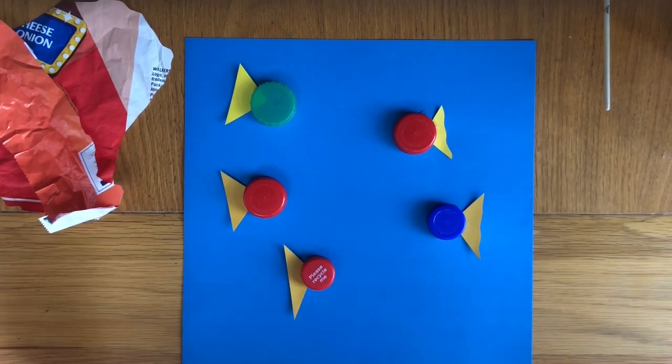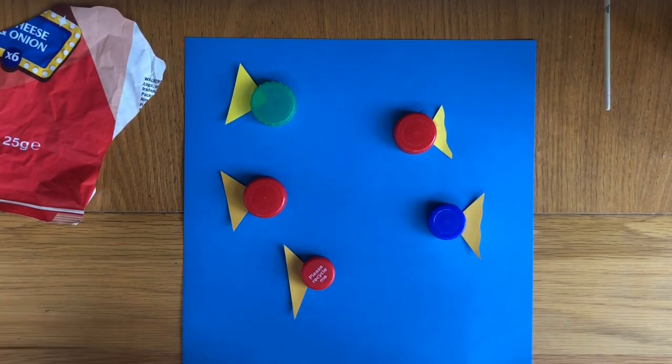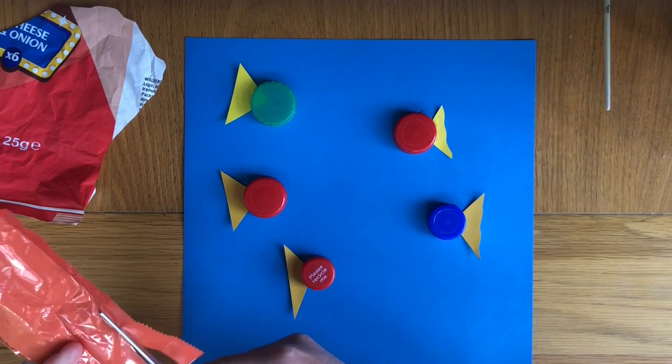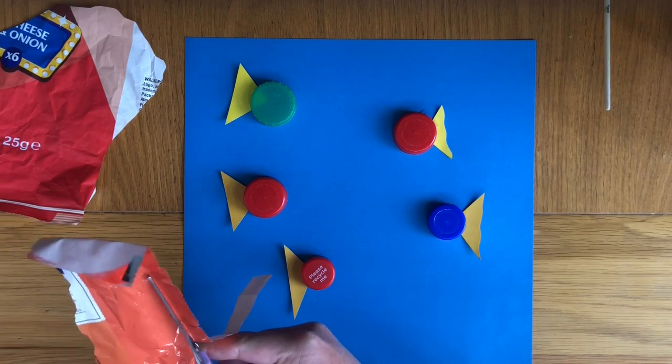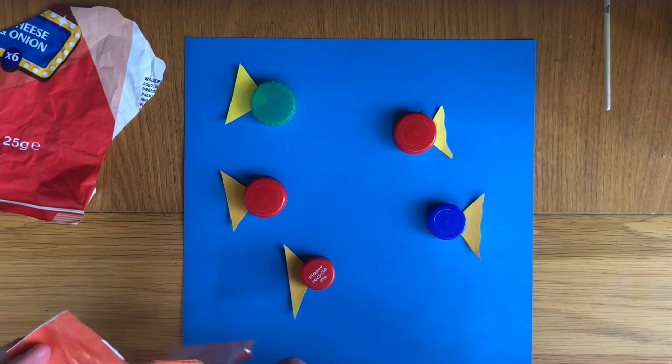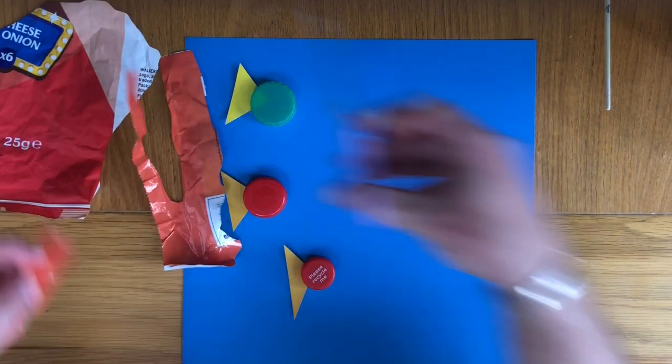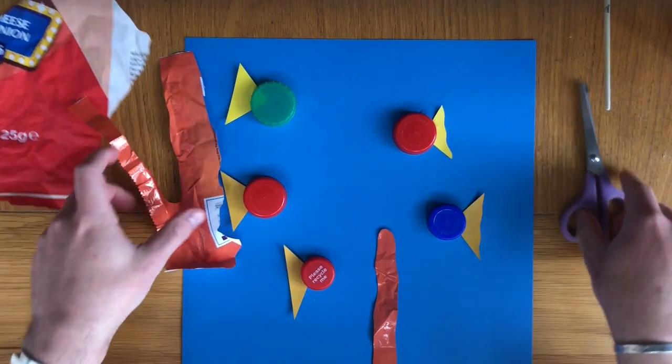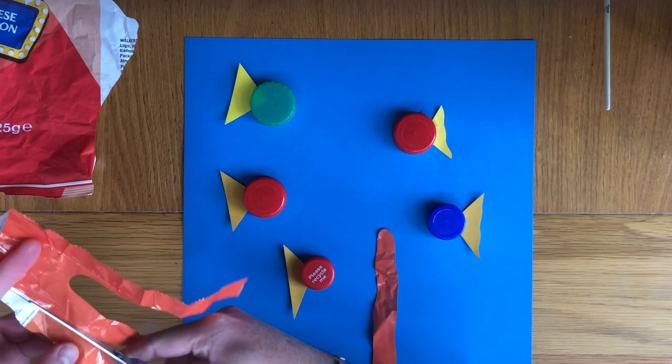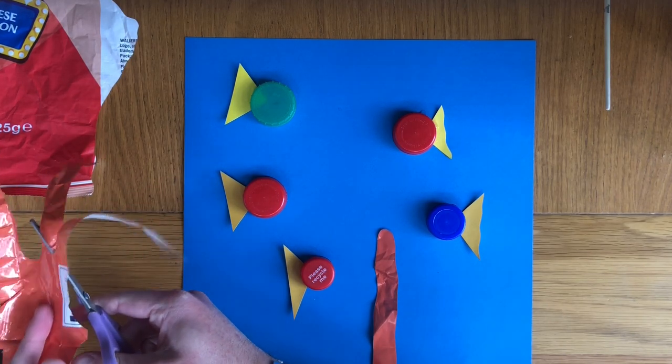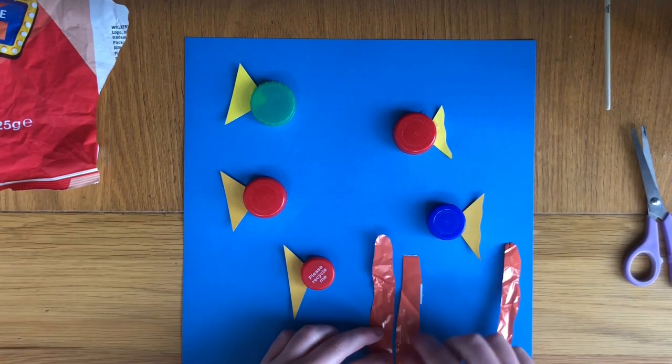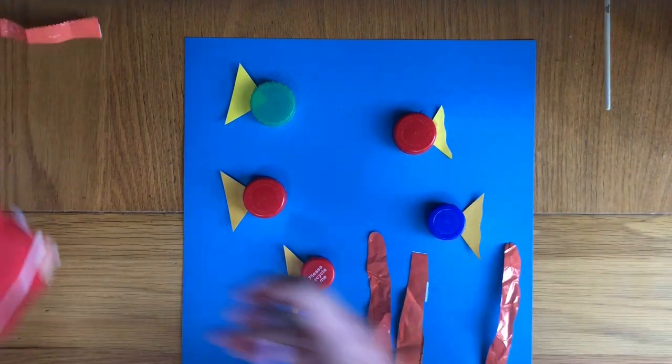Once the work's dry, get some wrappers or anything you can find in your house. We're going to cut this up so it represents seaweed, coral, or shells. I'm going to cut this into strips and randomly place it around the artwork. Some shapes I don't need to cut out because they already look nice.